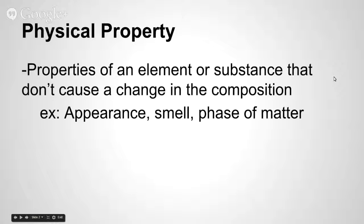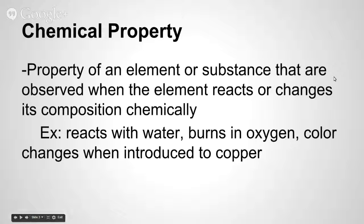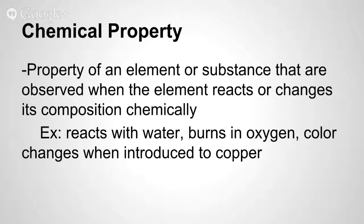Chemical properties, on the other hand, do change the composition chemically. They are properties of an element or substance that are observed when the element reacts or changes its composition — and that's a key word, reacts. For example, if something reacts with water, that's a chemical property. If it burns in oxygen, that's a chemical property. If it changes its color when introduced to something else like copper, that is a chemical property. So if it changes its composition, it's a chemical property; if it doesn't, it's a physical property.